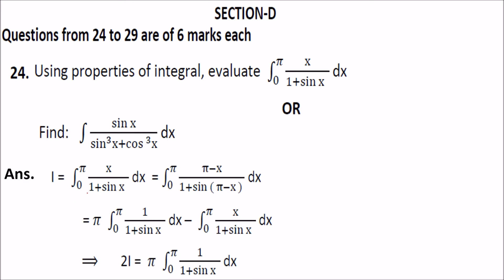We know that the integral of x by 1 plus sin x. If this is x, we can use this integral as pi minus x. So we substitute pi minus x. We know that sin(pi minus x) is nothing but sin x. Now we will take the pi by 1 plus sin x terms separately, and pi will come outside the integral.